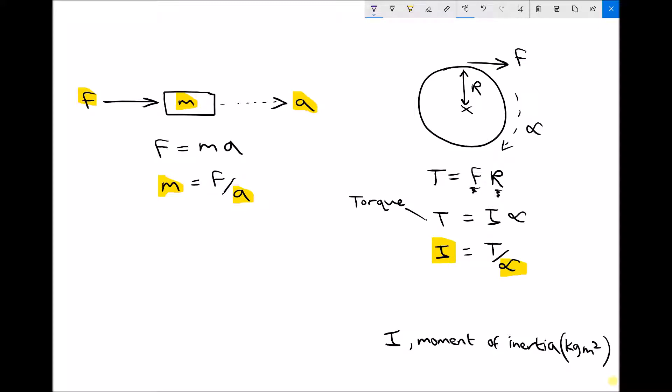So I guess the point that we're trying to get to, is that mass and moment of inertia are equivalent. Mass is resistance to acceleration, whereas I is resistance to angular acceleration. I'll just abbreviate that to resistance to alpha, which is angular acceleration.